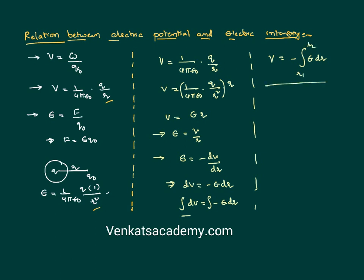This is how we can find a relation between electric field and electric potential, where electric field is defined as the amount of work done in bringing a unit positive charge from infinite distance up to a particular point. Similarly, electric intensity is defined as the force experienced by a unit positive charge when it is placed in an electric field.